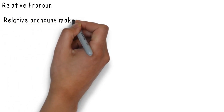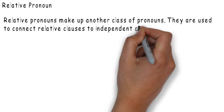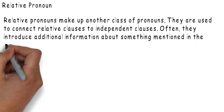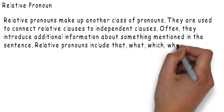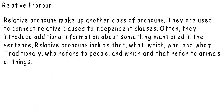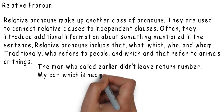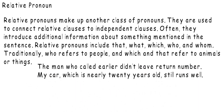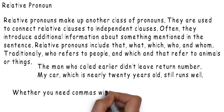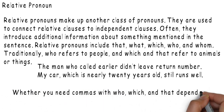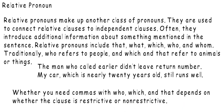Relative pronouns make up another class of pronouns. They are used to connect relative clauses to independent clauses. Often they introduce additional information about someone mentioned in the sentence. Relative pronouns include that, what, which, who, and whom. Traditionally, who refers to people and which and that refer to animals or things. For example: the man who called earlier didn't leave a return number. My car, which is nearly 20 years old, still runs well. Whether you need commas with who or which, and that depends on whether the clause is restrictive or non-restrictive.